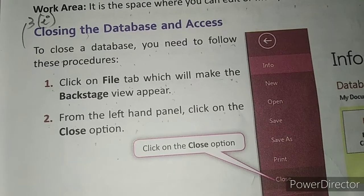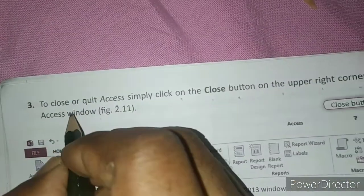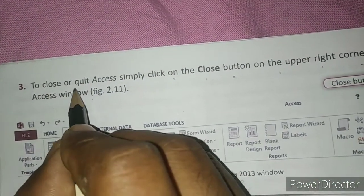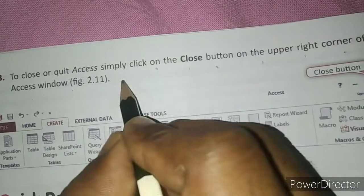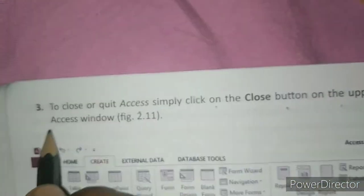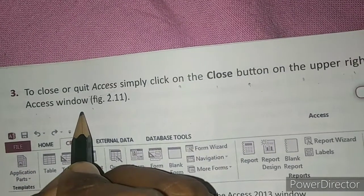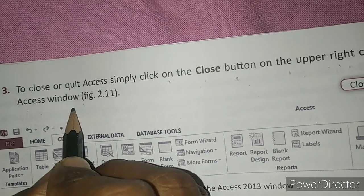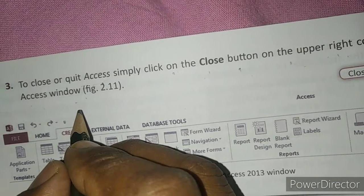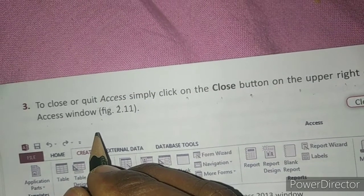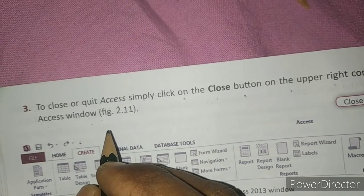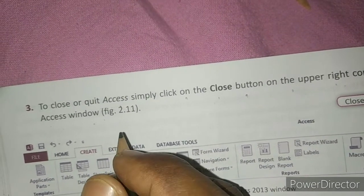On page number 20, the third point: to close or quit Access or DBMS, simply click on the Close button on the upper right corner of the Access window or database. These are the steps to close the database in MS Access.